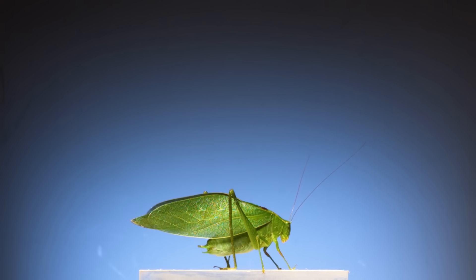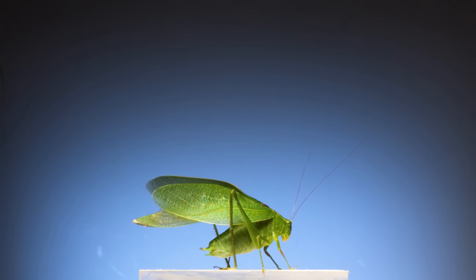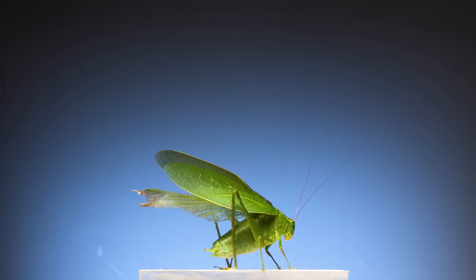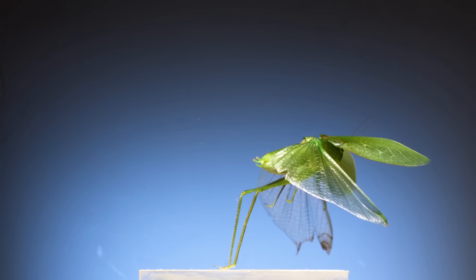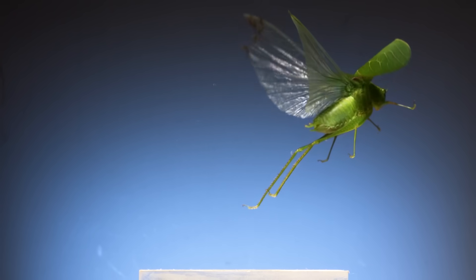This katydid with very leaf-like forewings is a lesser angle wing. The interesting part about this footage is that you can see the tip of one of its hind wings is damaged. A big chunk was missing when I collected it but despite the missing bit and a few tears in the rest of it, it seems they have no problem using the wings and flying normally.